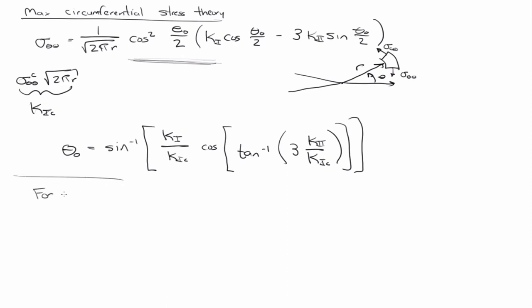So, therefore, theta equals to 0 degrees, which makes sense, right? If there's no K2, pure mode 1, the crack's just going to grow straight.